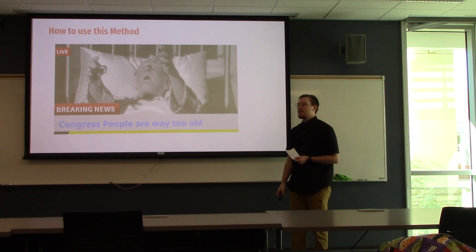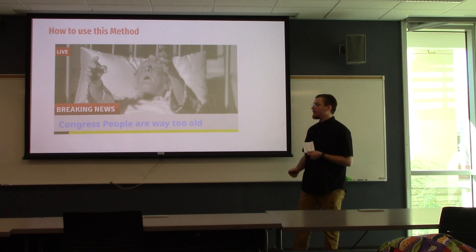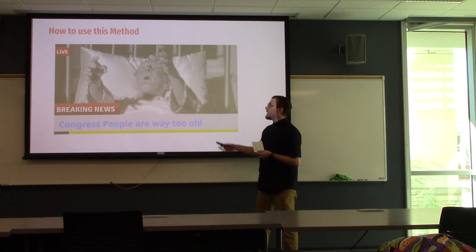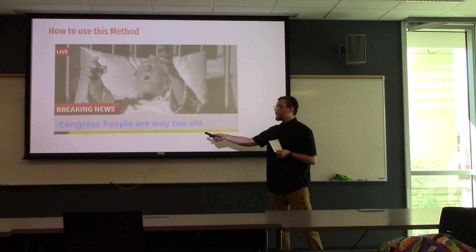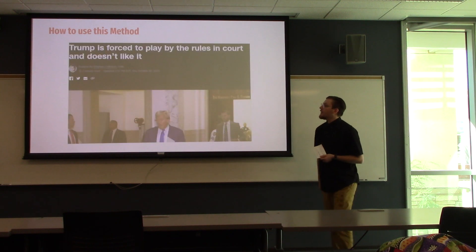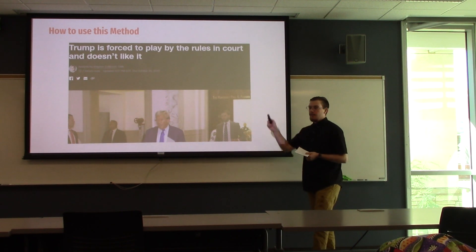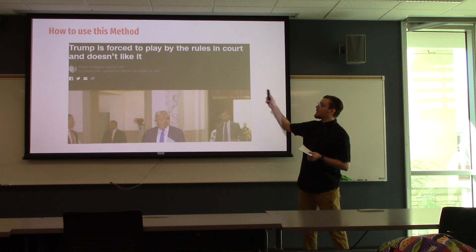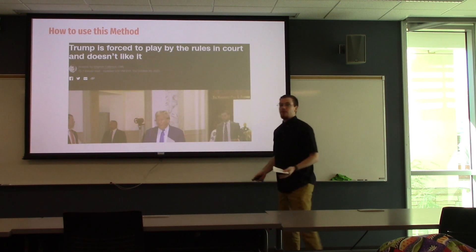Example one: 'Congress people are way too old.' As you can see in my thumbnail — I made this one, it isn't real — there's an old person on their deathbed. Things to look out for in a thumbnail: any picture trying to slander somebody or make them look stupid. Also watch for overuse of adjectives in a title, such as 'way too old.' Next: 'Trump is forced to play by the rules in court and doesn't like it' — October 26, 2023. The thumbnail tries to make him look goofy, and 'doesn't like it' is an assumption — you want to look out for assumptions as well.